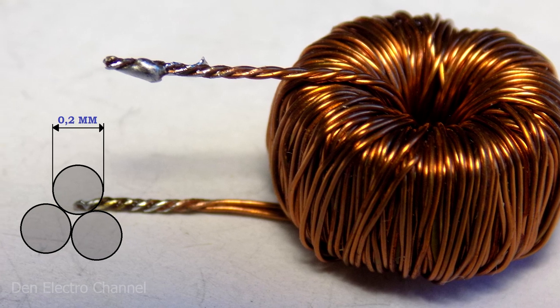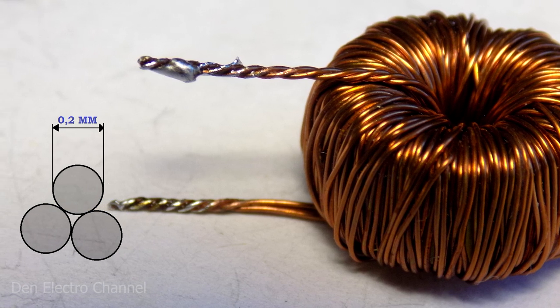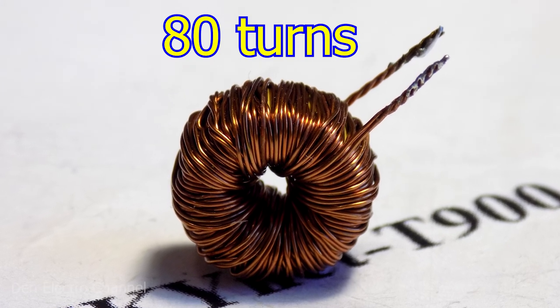I took the wire with a diameter of 0.2 millimeters and folded it second. Then I wound 80 turns.